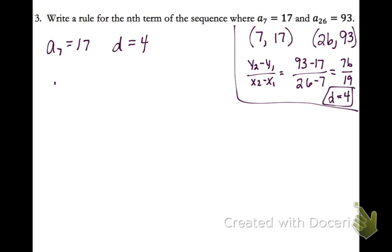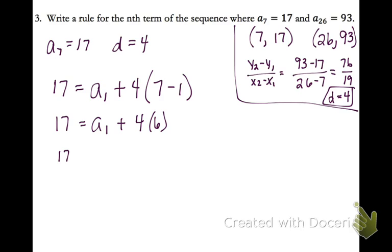So I have a sub n, which is 17, equals my first term, which I don't know, plus my common difference, times n, which is 7, minus 1. So I get my first term as negative 7.